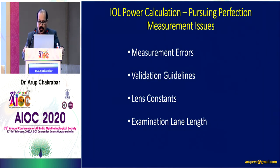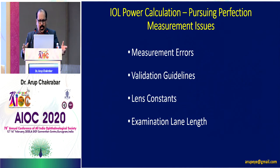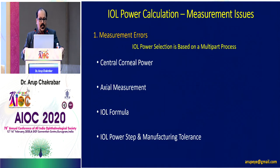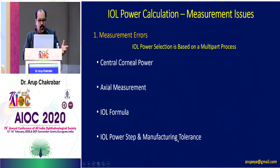There are certain measurement issues that have to be taken care of, as measurement errors do crop up. How do you reduce the measurement errors? The validation guidelines are a new concept that has come up. A word about lens constants to fine-tune your refractive outcome, and an examination lane length. IOL power selection is based on a multi-part process requiring measurement of central corneal power, IOL power calculation, axial measurement, IOL formula, and IOL power step and manufacturing tolerance — not a very frequently discussed concept.